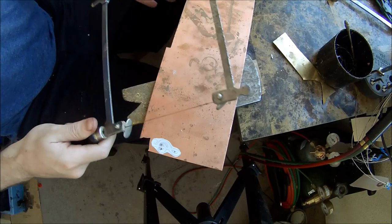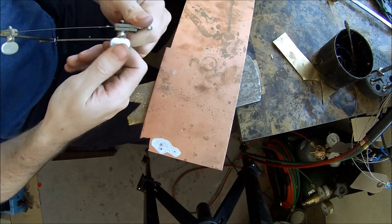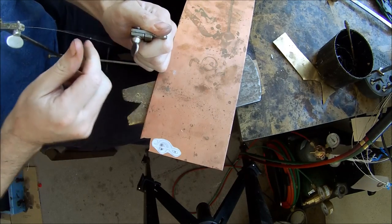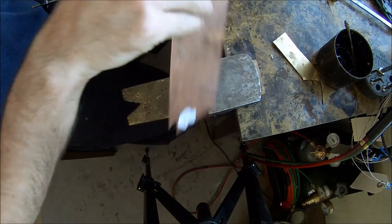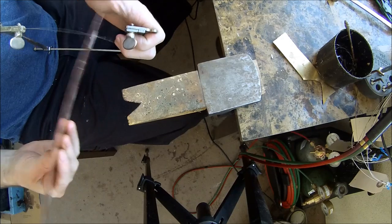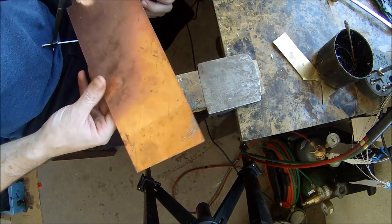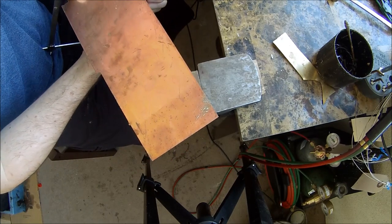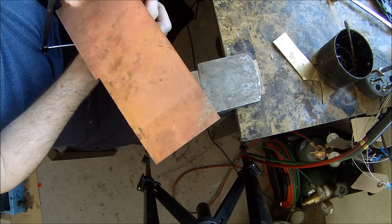To cut out holes that are inside of something, you're going to need to undo your blade and put it through the hole that you just drilled. Once you do that, be careful not to break the blade and reattach everything. Reset your saw, and start sawing.